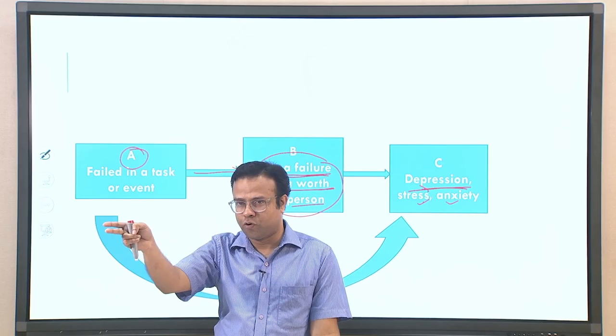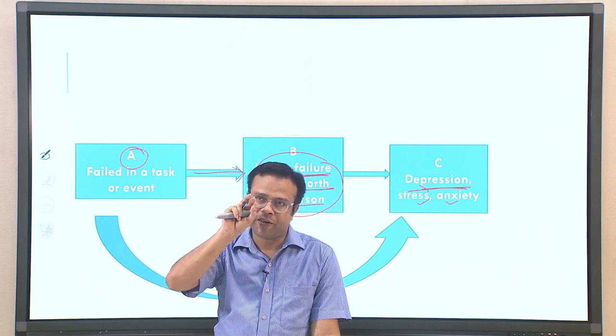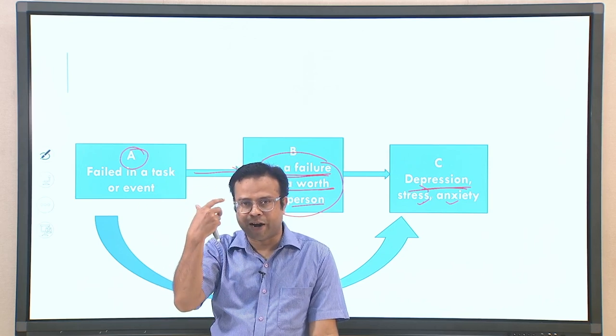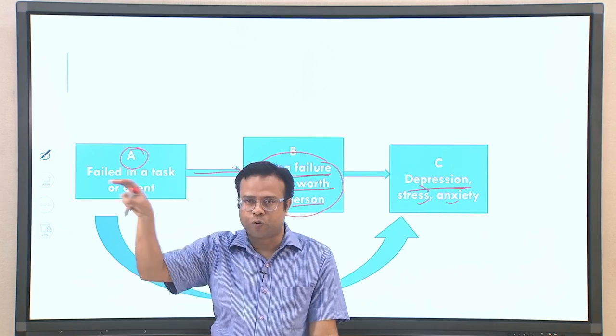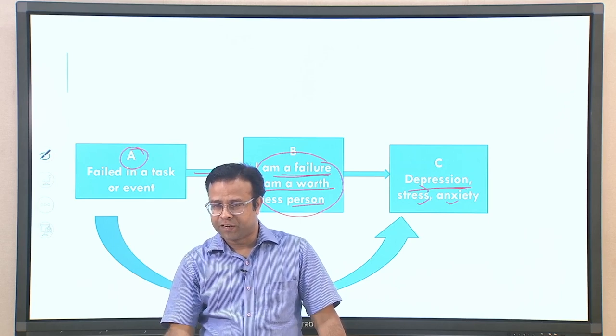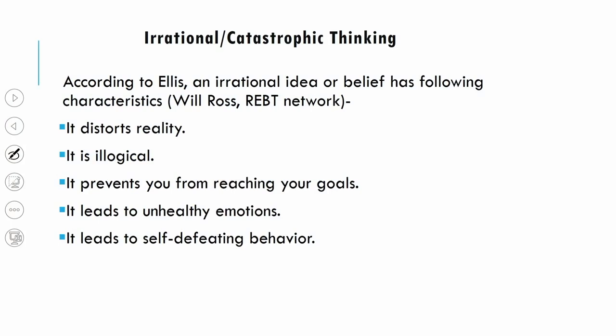The event itself is not the cause — it is the belief that is important: the beliefs generated by the event. Many emotional disturbances are actually in the B part, which we generally do not realize is causing the emotions. We all the time blame the situations, persons, or events. Most of us have many irrational beliefs at the B part, which we develop as habitual patterns, and these thoughts are at the root of many emotional disturbances.